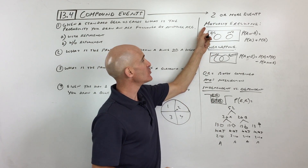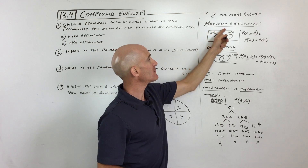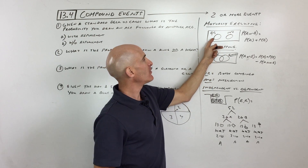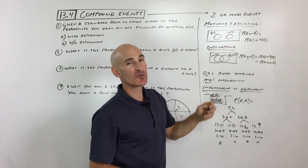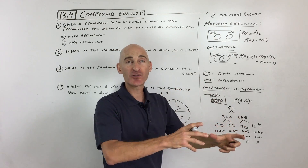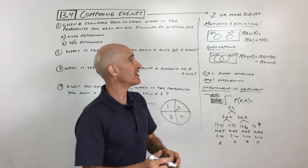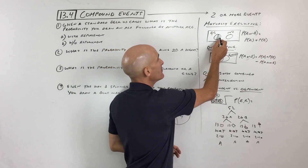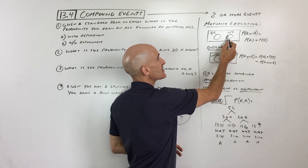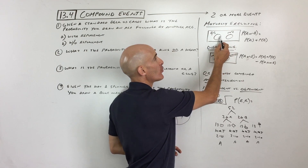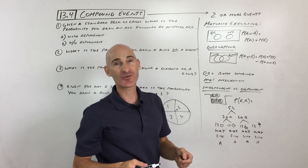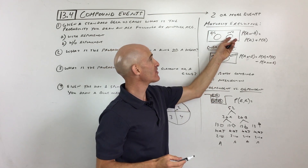The first thing is mutually exclusive versus overlapping. An example of mutually exclusive would be people that are in 9th grade versus people that are in 10th grade. This is the set of 9th graders, this is the set of 10th graders — you can see there's nobody that's in both 9th grade and 10th grade. It's one or the other.